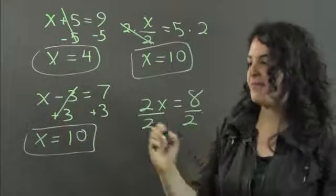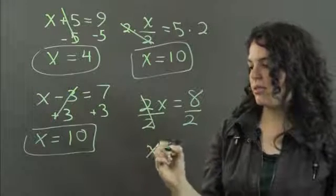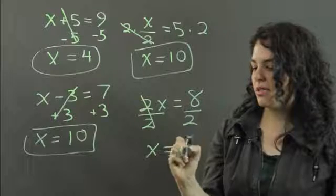Remember that. 2 over 2 cancels out. I get x equals 8 divided by 2 is 4.